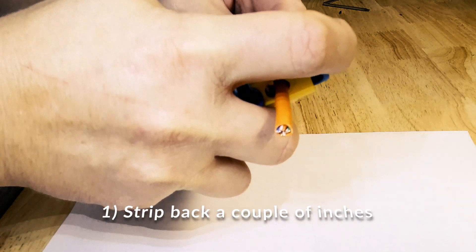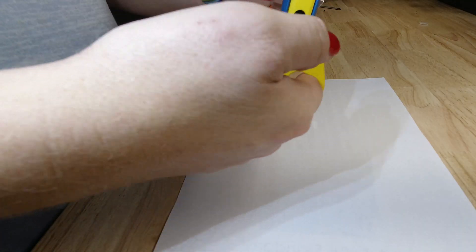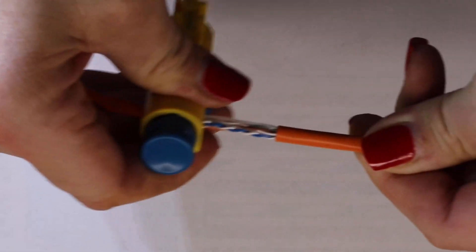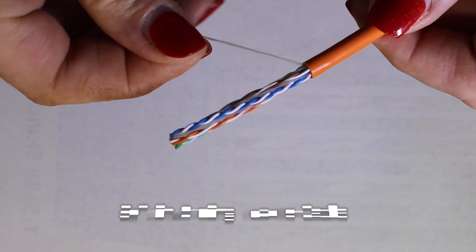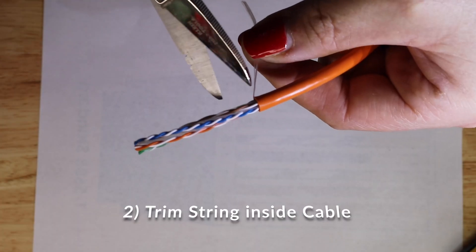You're going to want to start by stripping away a couple inches of that sheath from the cable. I'm using a specific Klein stripping tool that works with Coax and CAT6 cables, and I'll link to it in the description below. Next up, you're just going to want to cut that little string that's included in the cable run.